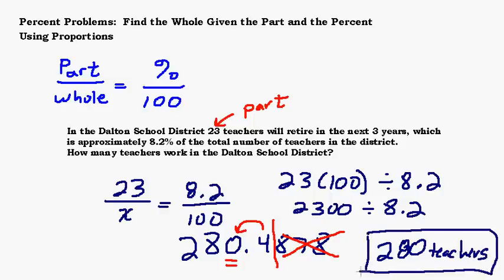Always label your story problem answers with what that number represents, in this case teachers. Then go back and ask yourself if it makes sense. I have 280 total teachers and it says 8.2% of them are going to retire, and they're saying that's 23 teachers. What would be an easy percent close to 8.2? That would be 10%. So 10% of 280, just move the decimal over, would be 28. If 10% of the teachers were retiring it would be 28 teachers, but it's less than 10%, so a little less than 28 teachers. 23, that makes sense.